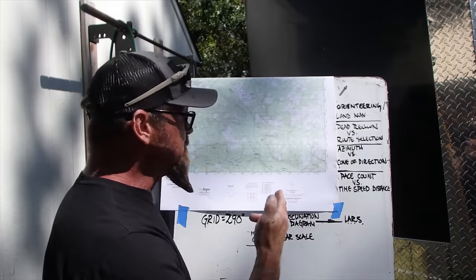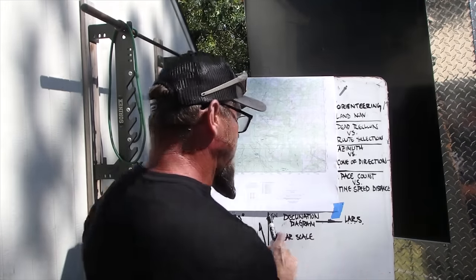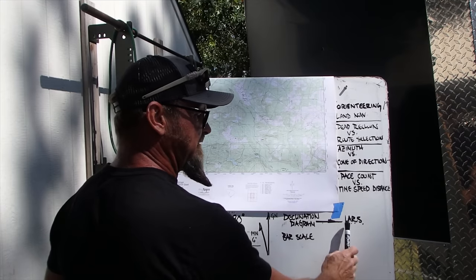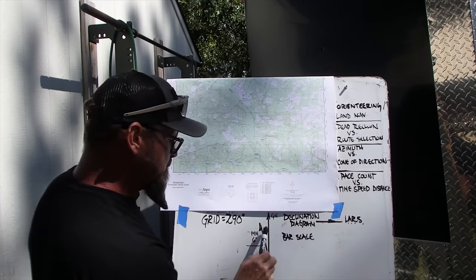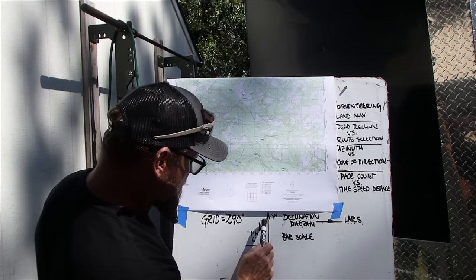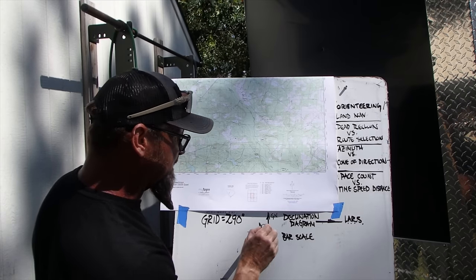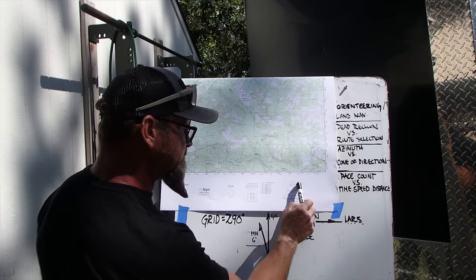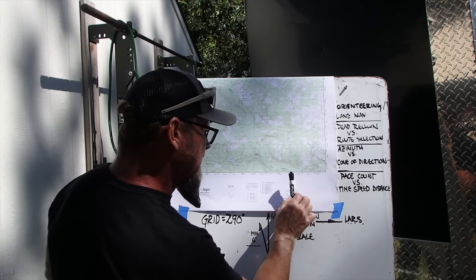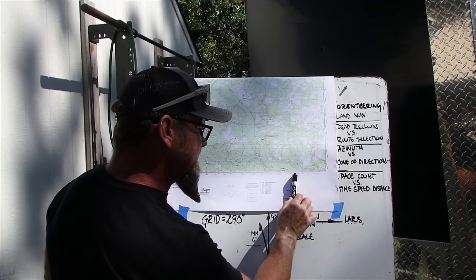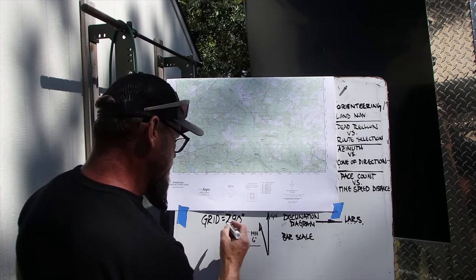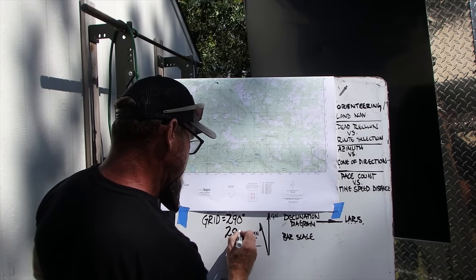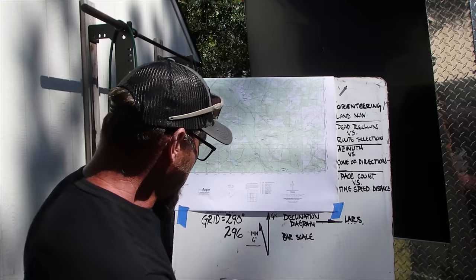So we know grid north is 290 degrees. The rule of thumb with the declination diagram is LARS: Left Add, Right Subtract. The declination diagram shows the difference between grid north and magnetic north is 6 degrees, and that's westerly — or left. So I need to add that 6 degrees to my 290, which gives me 296. That is my magnetic north heading.